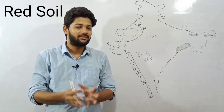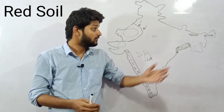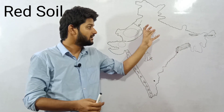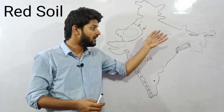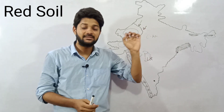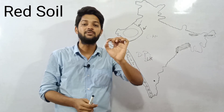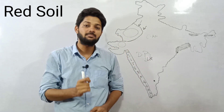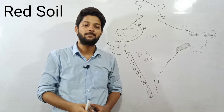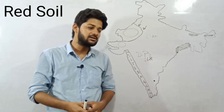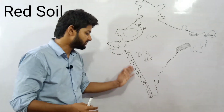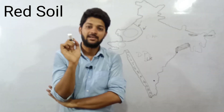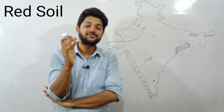Red soil is found in Odisha, then in Chhattisgarh, then in the southern part of the middle Ganga plain. The middle Ganga plain that we studied in alluvial soil — in the southern part of that middle Ganga plain, some red soil is also found. And in the pediment zone of the Western Ghats, red soil is also found.